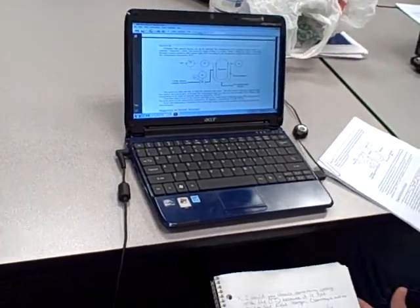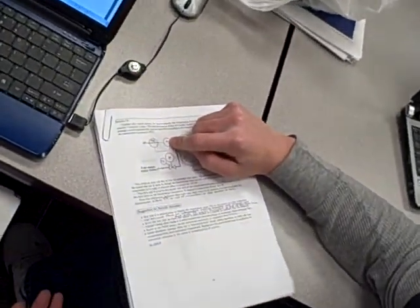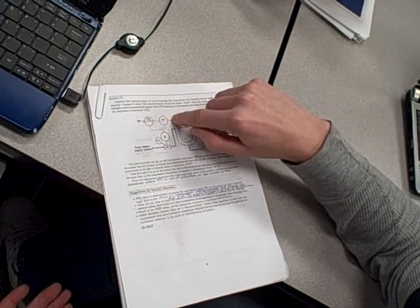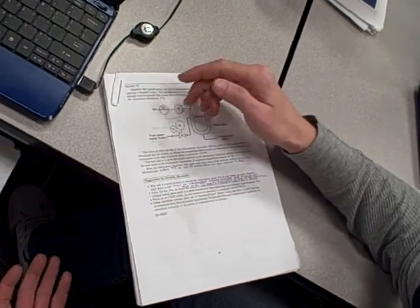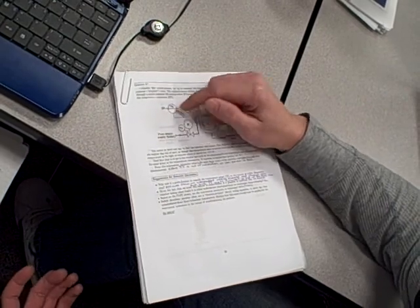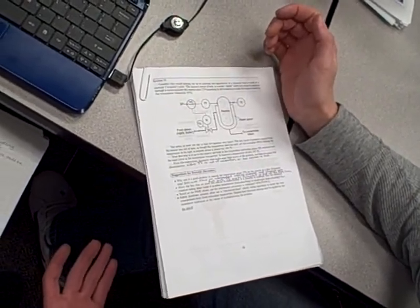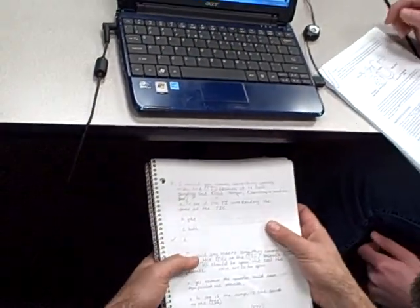Either the temperature transmitter itself is out of calibration so that the temperature that's coming in is not outputting the correct milliamp signal to the controller, or the primary sensing element could possibly be bad, so it's not giving the right input into the transmitter.